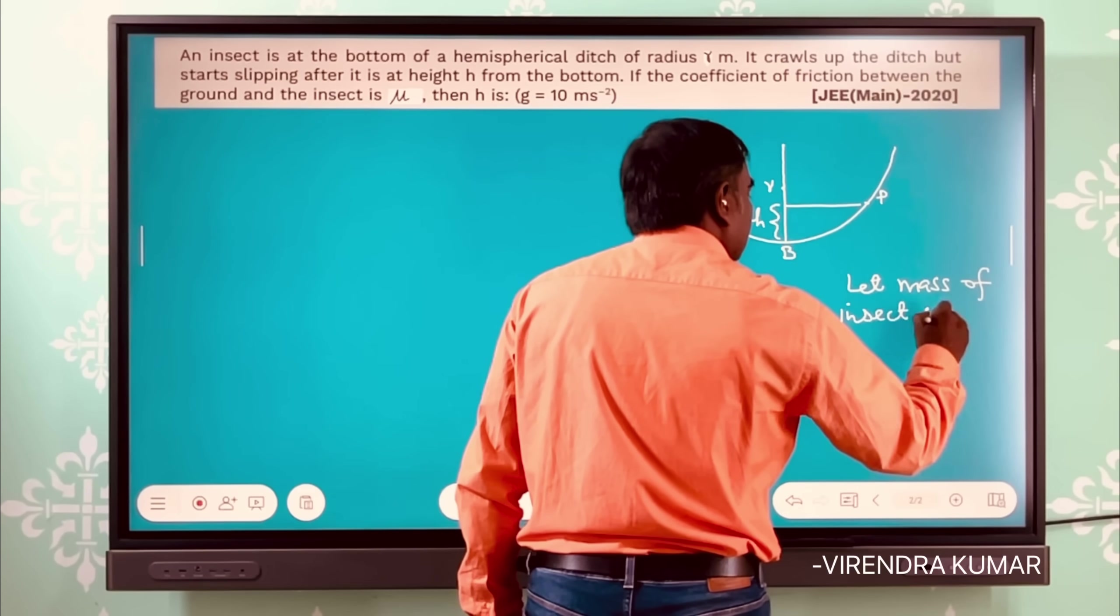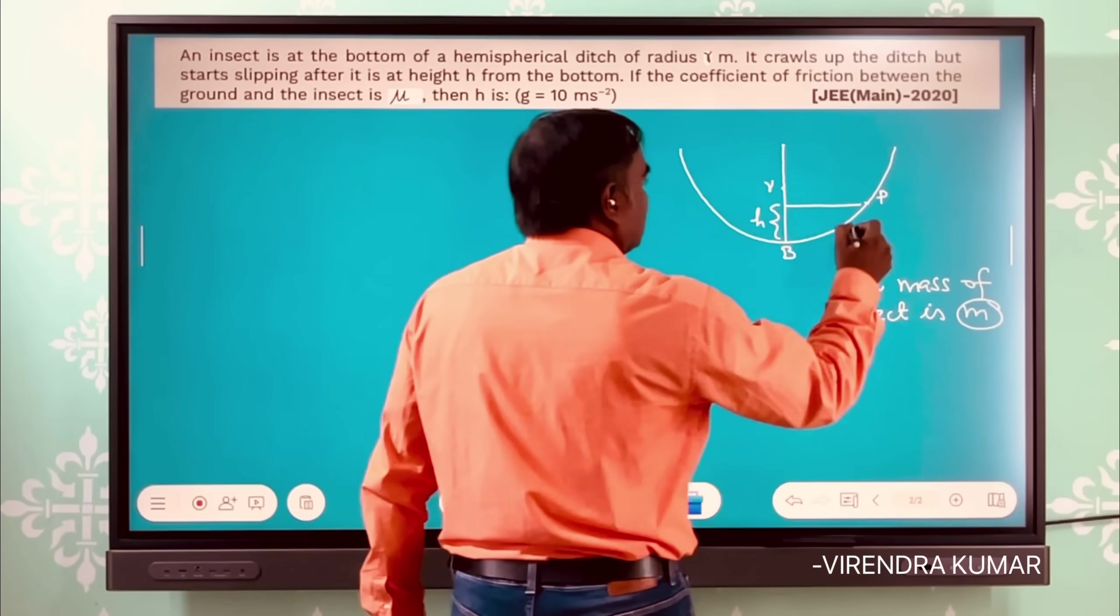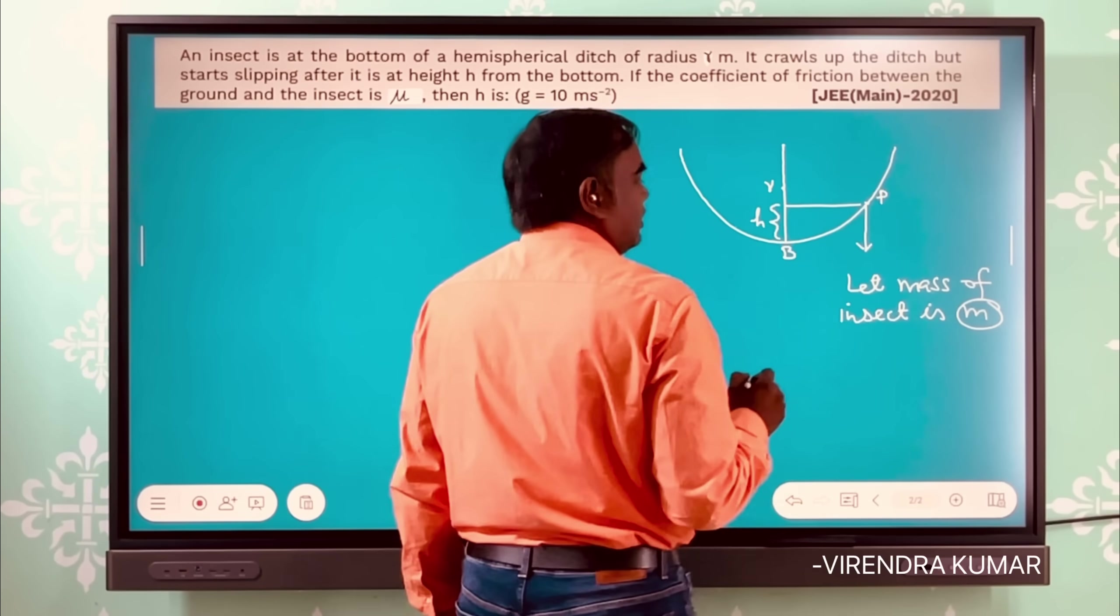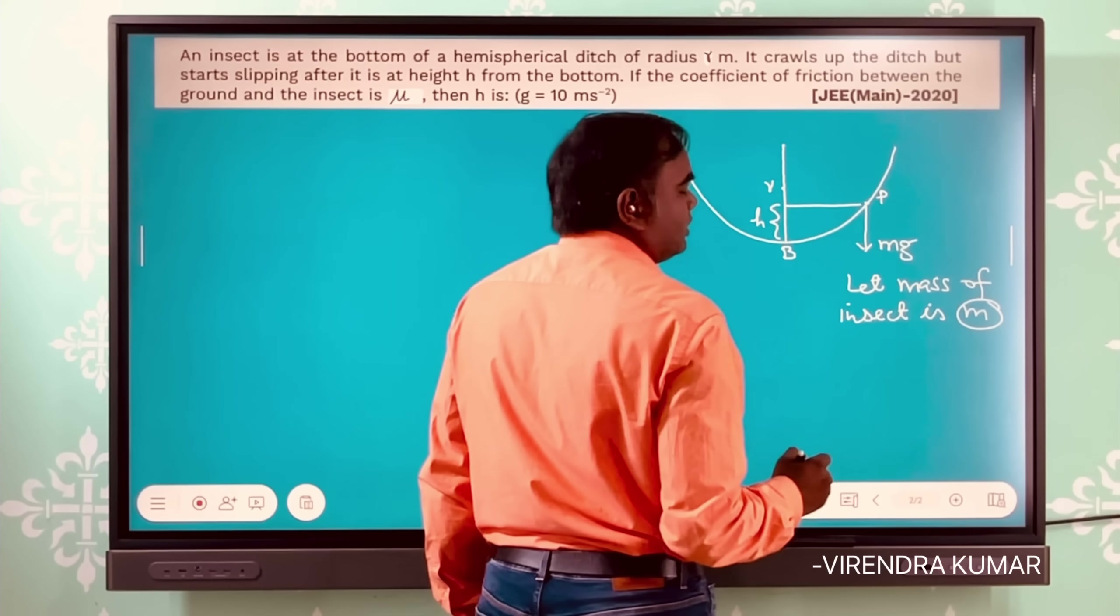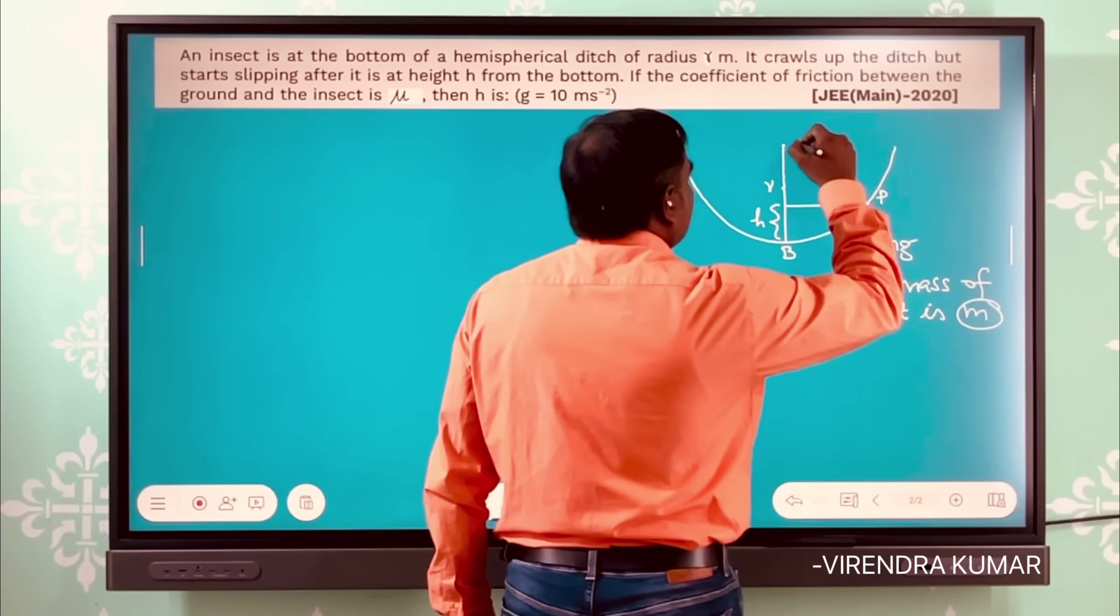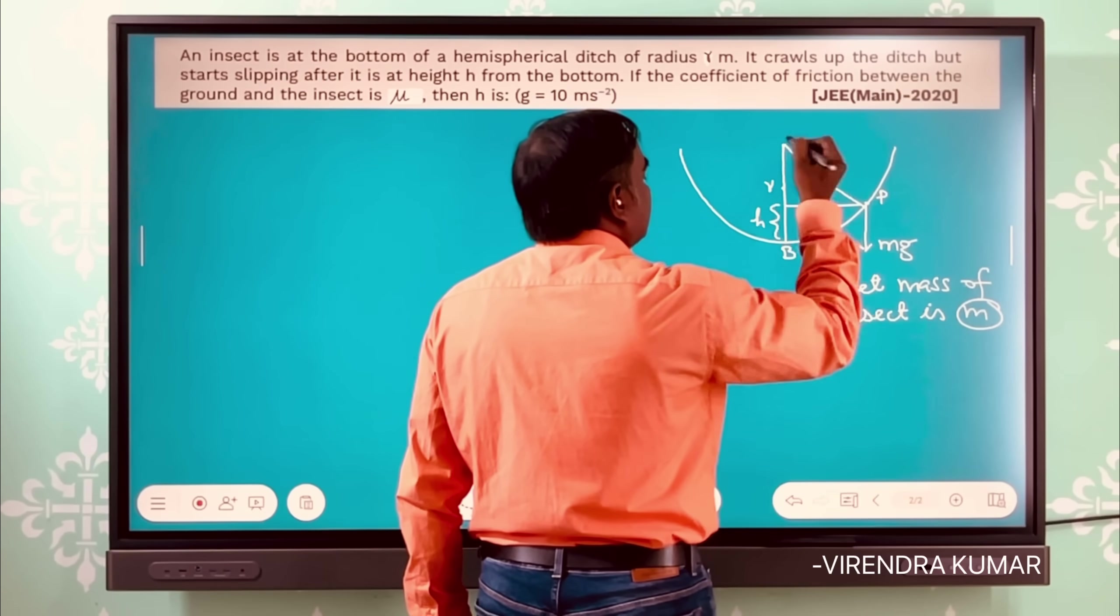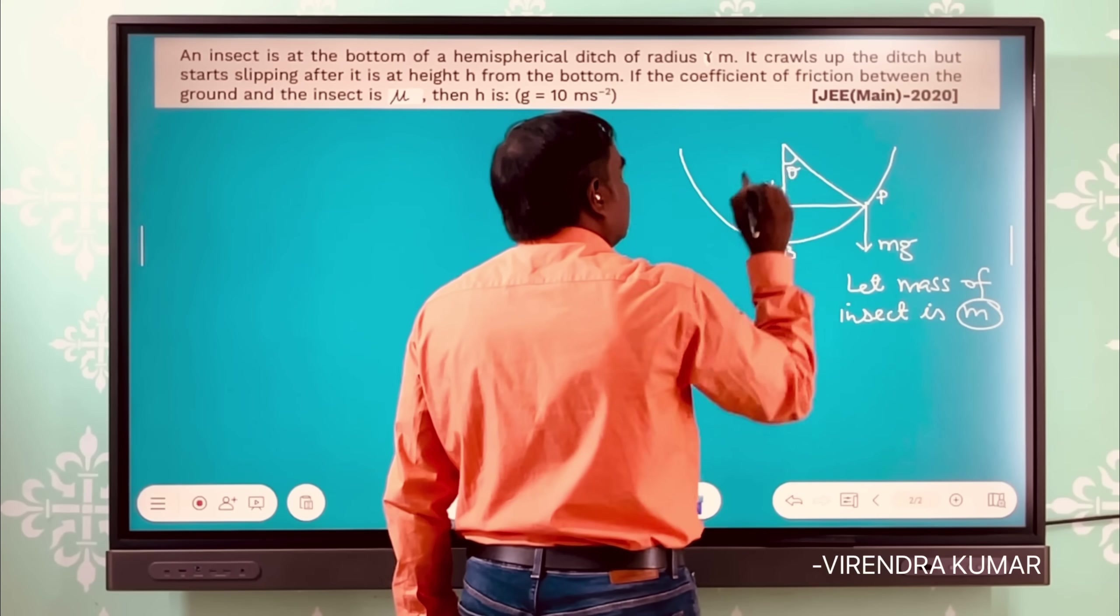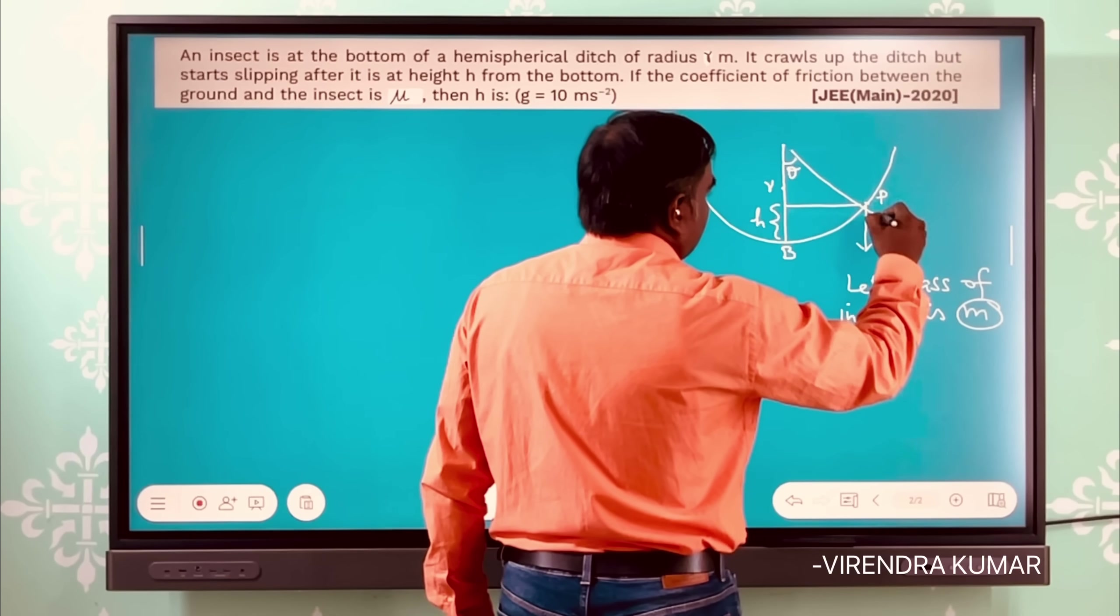So this mass will be acting downward in the form of gravitational force. And suppose this is around radius and it makes angle θ with the vertical. Then after extending this...